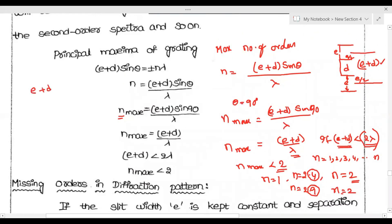This is e+d. The e+d value determines the number of slits. If you have to choose the number of slits, n_max = (e+d)sin(90°)/λ. Since sin(90)=1, it's just e+d/λ.